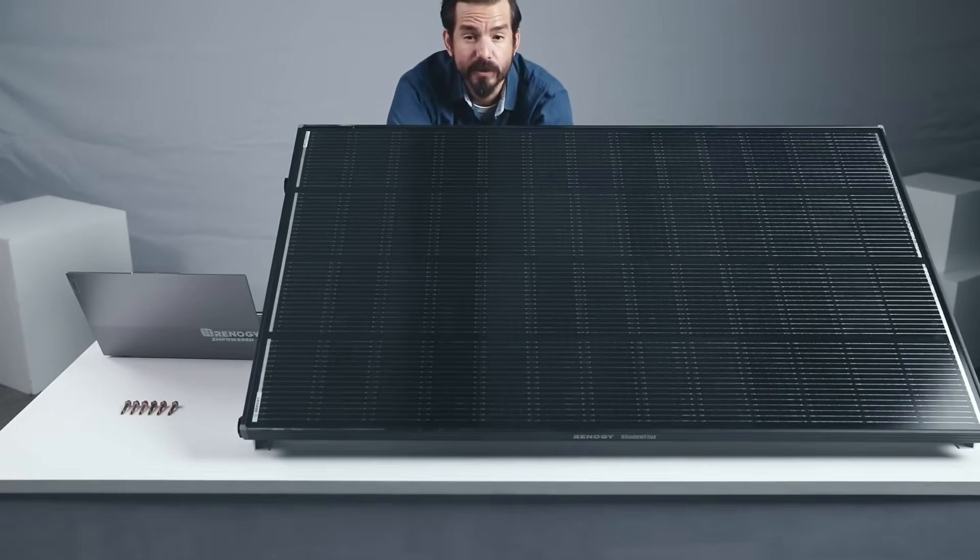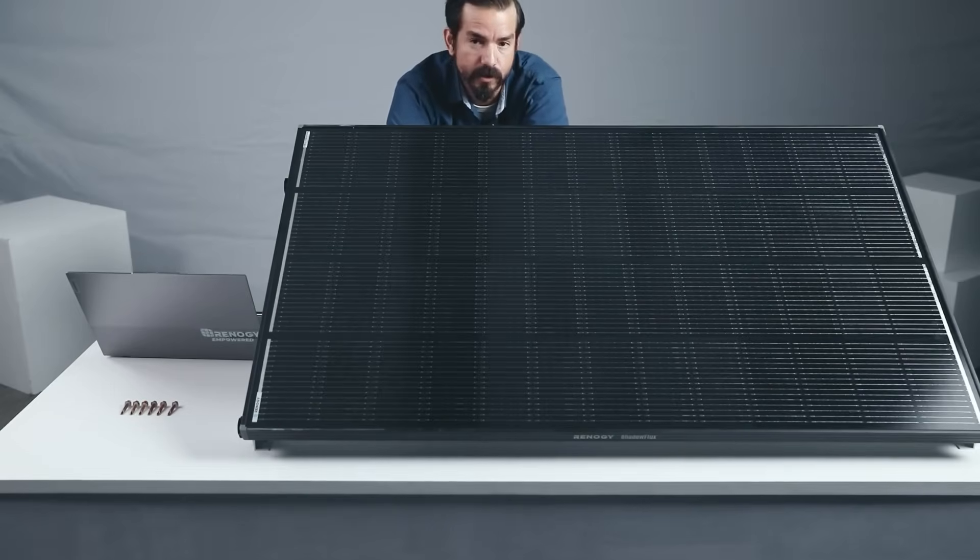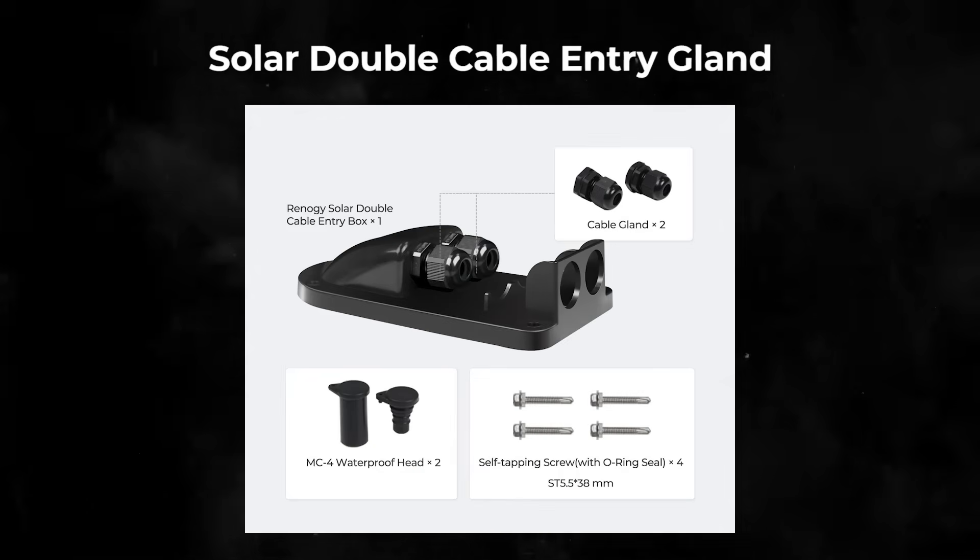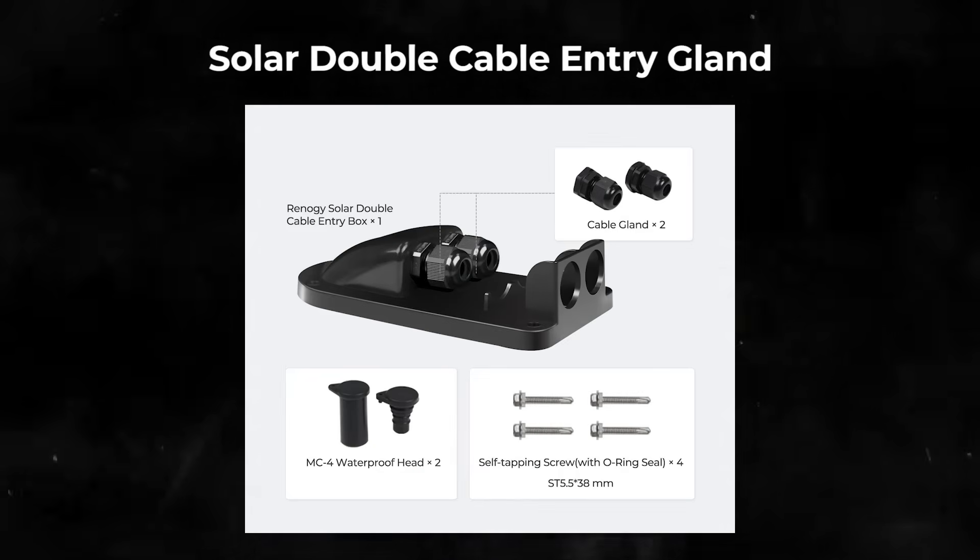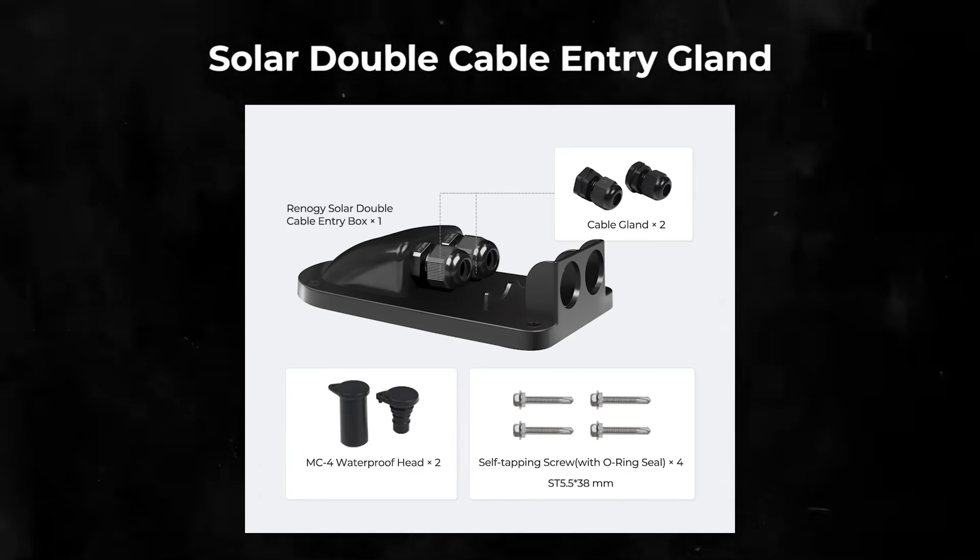Okay great, now we have the panel nice and mounted. We really need to figure out how to run the wires through our surface. That's where this accessory comes in handy. This is our new waterproof cable entry housing. It's perfect for this Shadow Flux panel and any of our other panels that you need to run wires through a surface.